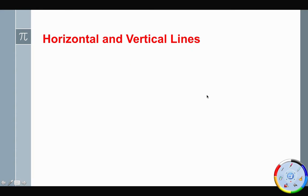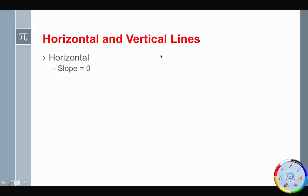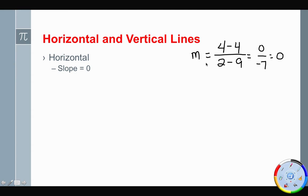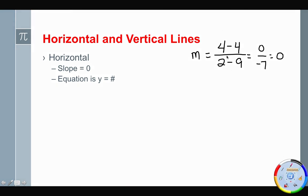We have two more pieces. The first is horizontal and vertical lines. Horizontal lines have a slope equal to zero. For example, if you get (4 − 4) / (2 − 9), that's 0 / −7 = 0. The equation is simply y equals whatever the y-value was. In this case, both y-values were 4, so the equation is y = 4. That's the equation for a horizontal line through 4.